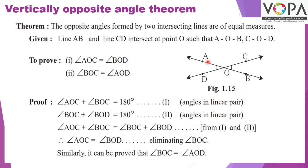Proof. Angle AOC plus angle BOC equals 180 degrees — angles in a linear pair. Similarly, angle BOC plus angle BOD equals 180 degrees — angles in a linear pair. Therefore, angle AOC plus angle BOC equals angle BOC plus angle BOD, since both sums equal 180 degrees. After eliminating angle BOC from both sides, we get angle AOC equals angle BOD.